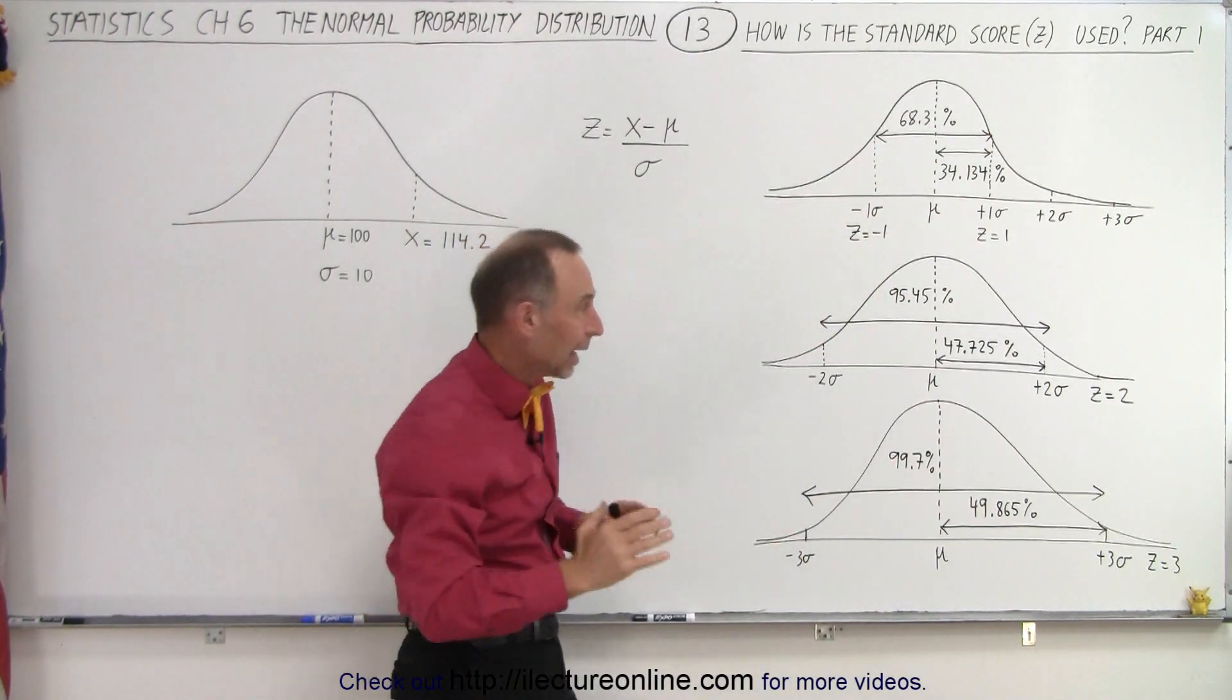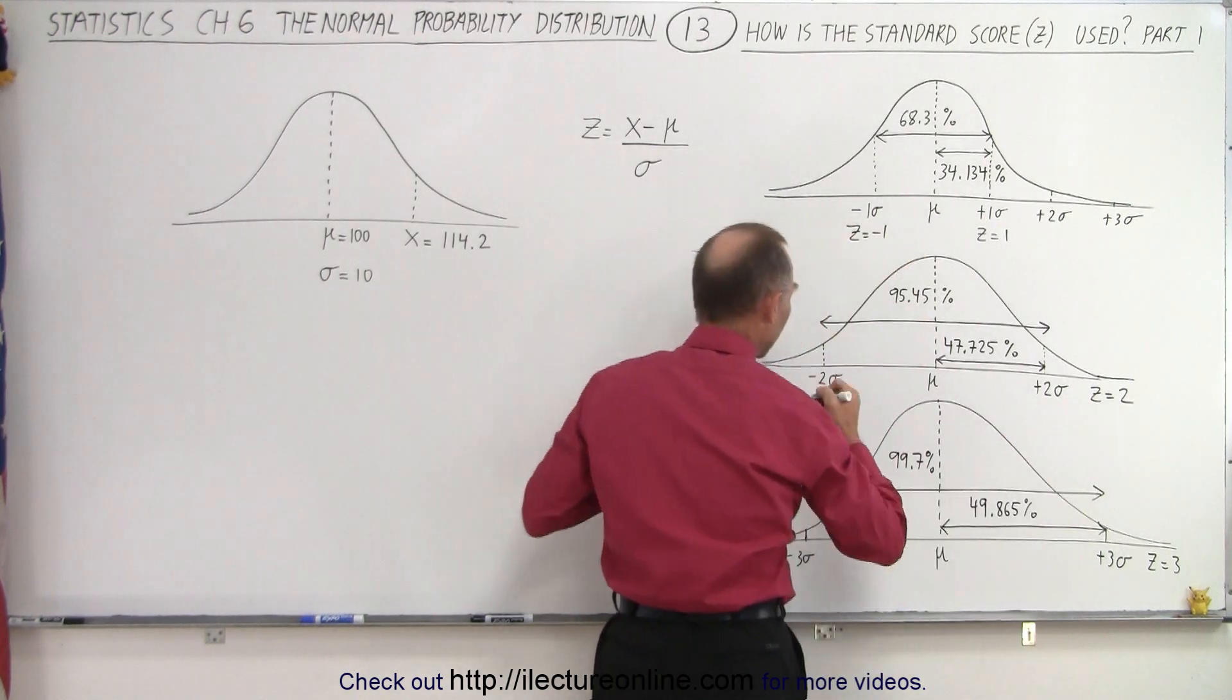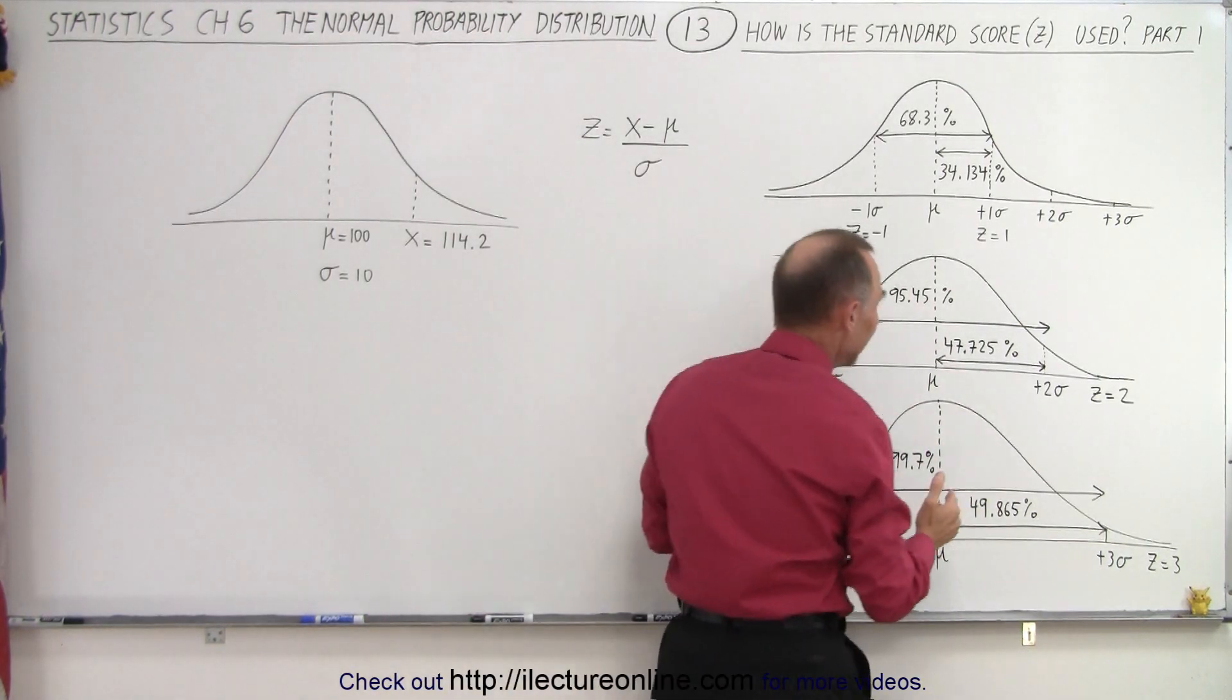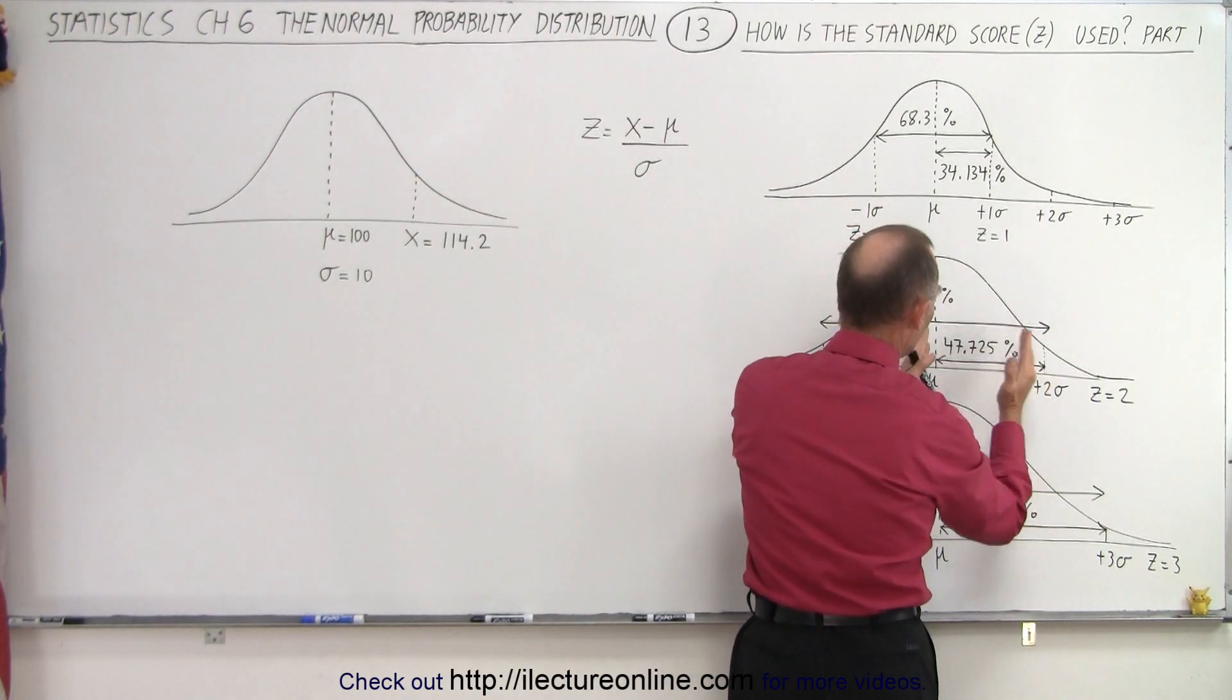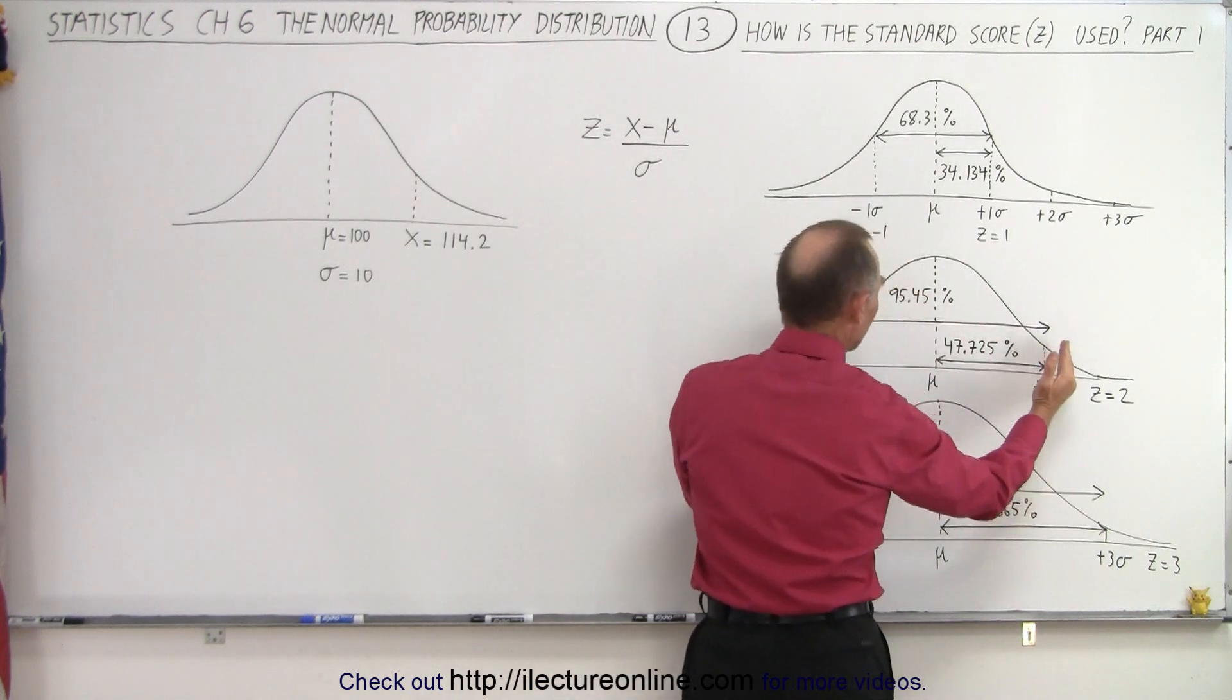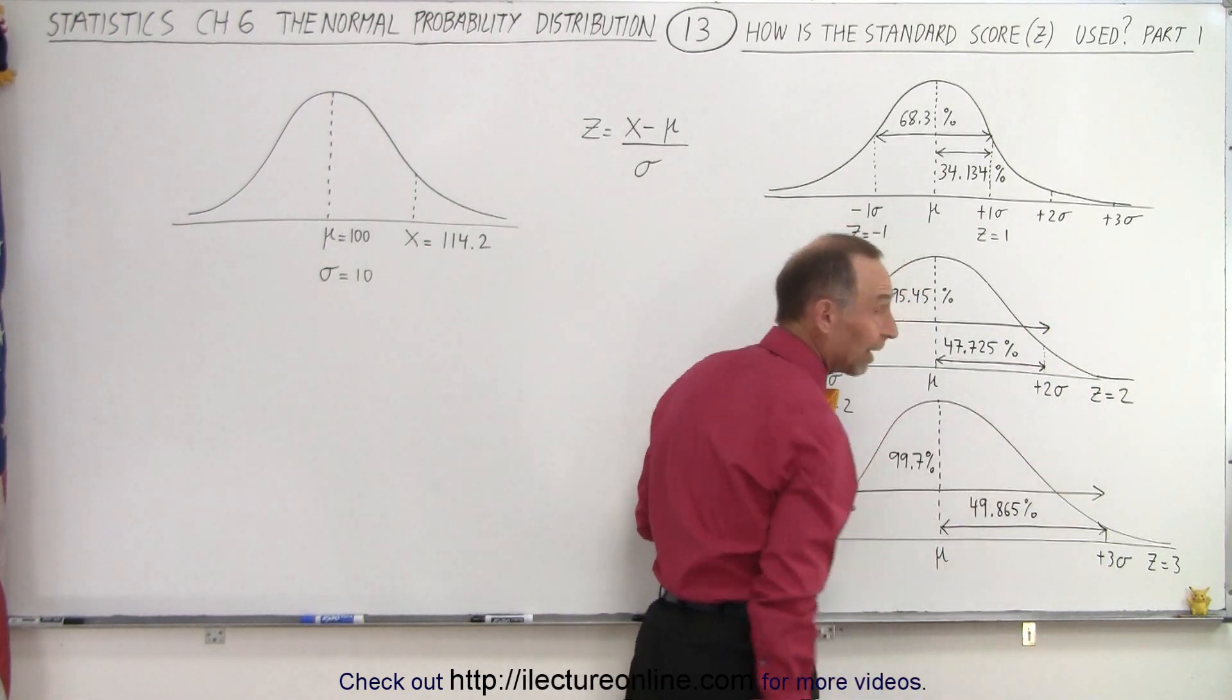If we now expand that, and we go to plus or minus two sigma, two sigma above the mean, and two sigma below the mean, at this point, Z equals two, and this point, Z equals negative two. Essentially, it's the same number, just with a negative sign. And we can see that 47.725% of all the values in the distribution will fall between the mean and two sigma above the mean, and of course, if we go to both sides, negative two sigma to positive two sigma, we double that number, and 95.45% of all the values will fall between plus or minus two sigma.